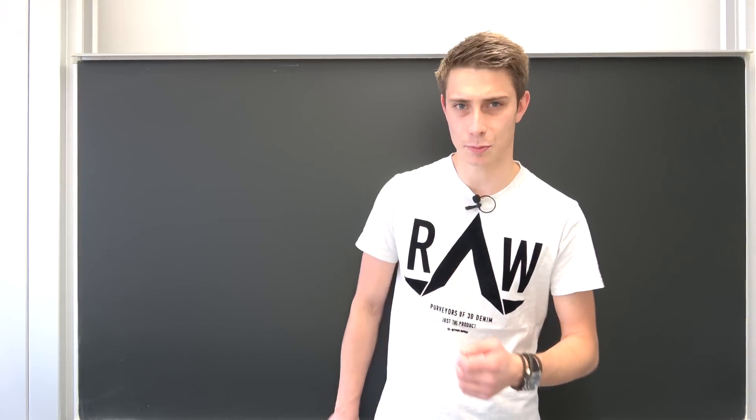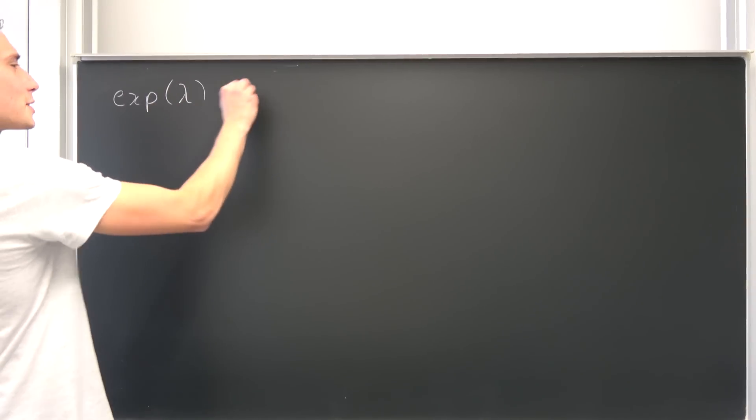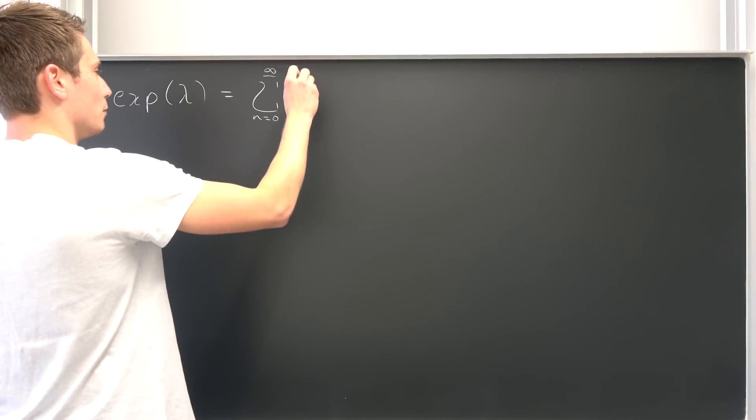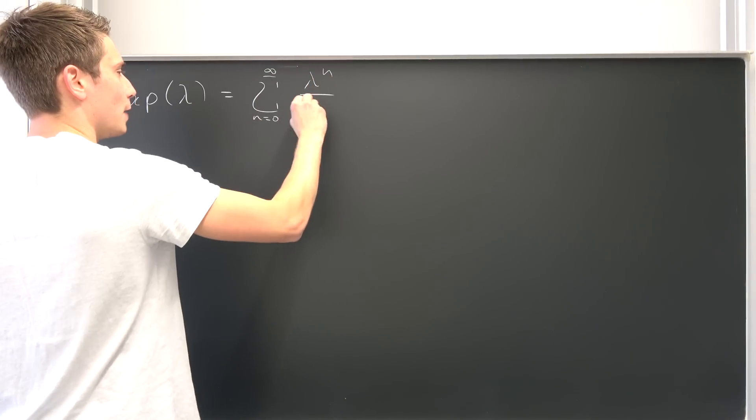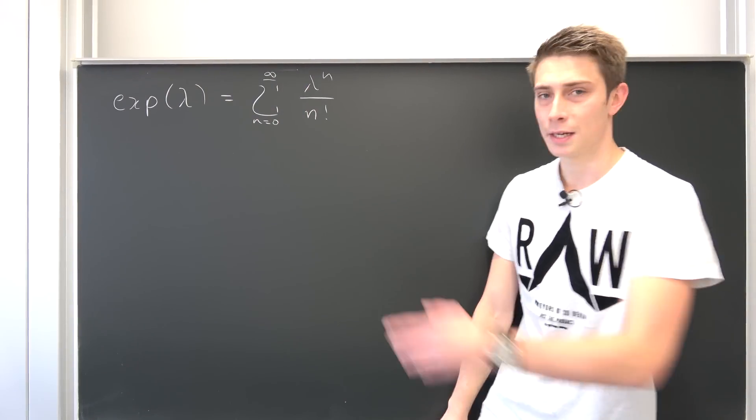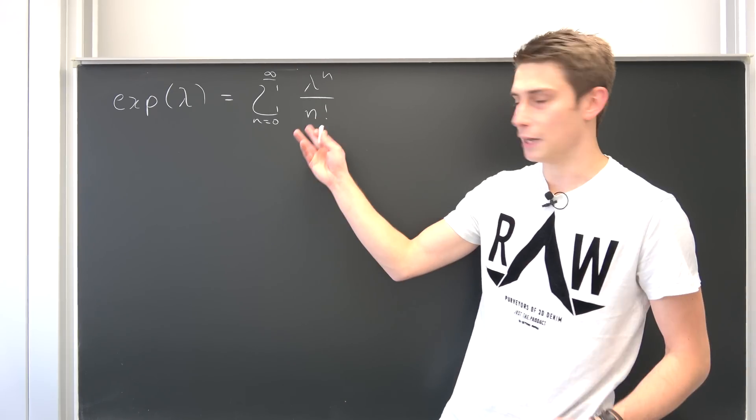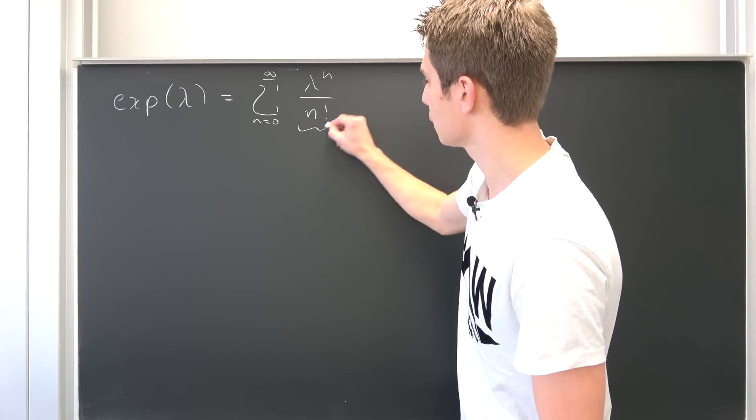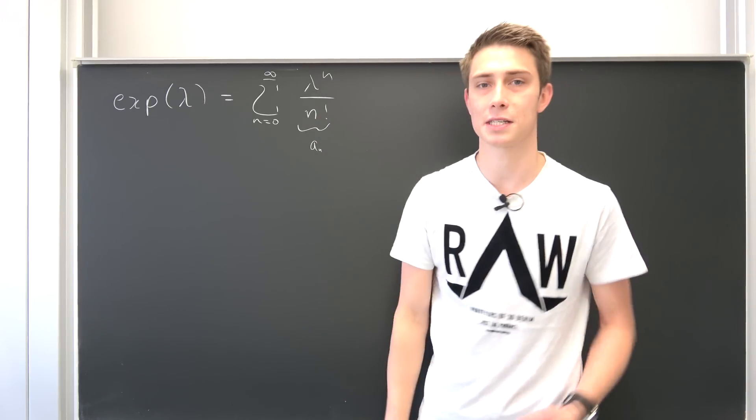So let's take a look at the exponential function at first. So exp of lambda this time is nothing but the infinite series expansion of lambda to the nth power over n factorial. And you see, a series is nothing but the infinite summation of many sequence members. Well, those are our sequences a_n, for example.